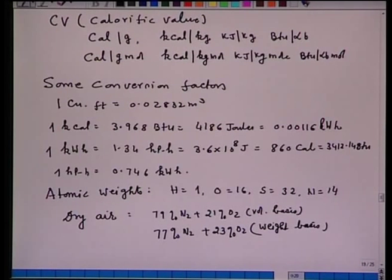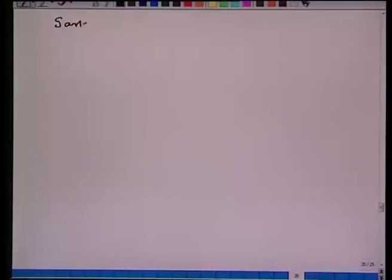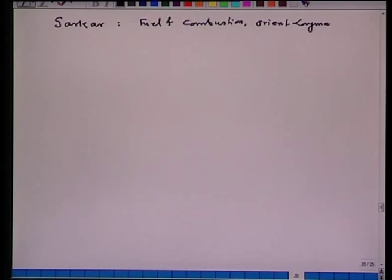Calorific value can be determined experimentally or by theoretical consideration. In the laboratory, a bomb calorimeter is used: a unit mass of coal is completely combusted at constant volume, the rise in temperature of water is noted, and from this the calorific value is calculated. Note that this gives calorific value at constant volume. For further details, refer to Sarkar, Fuel and Combustion, Orient Longman, 1974.